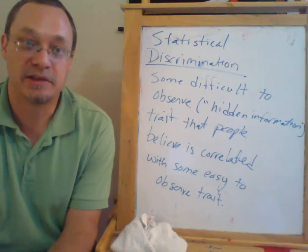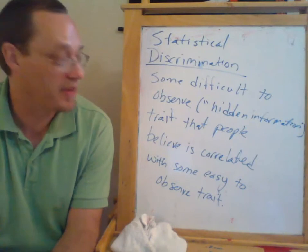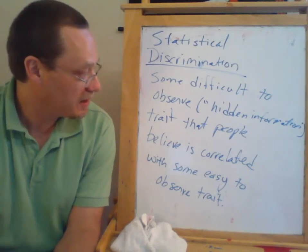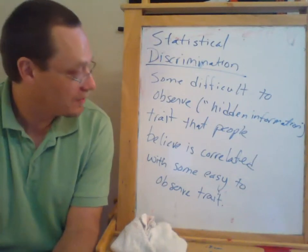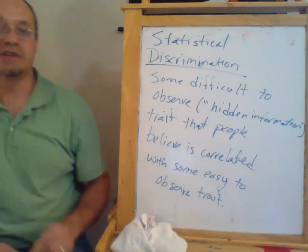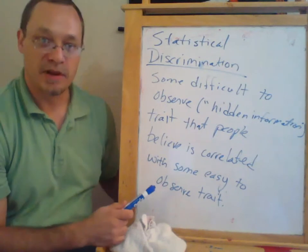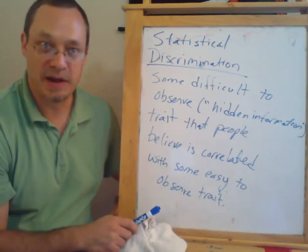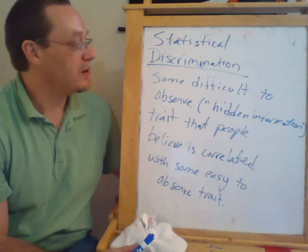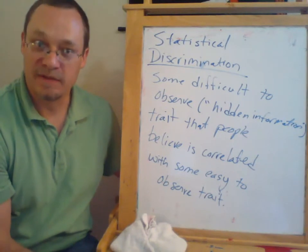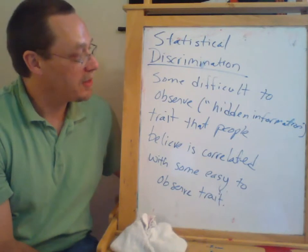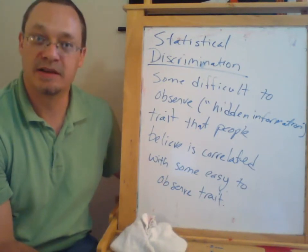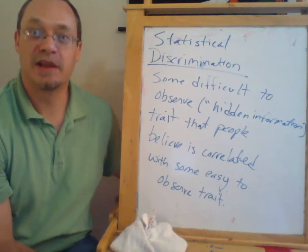In that case, the correlation is real — we have pretty reliable statistics on that. In other situations, the correlation might be imagined; for example, people might believe that fat people are lazy. What's going to happen with statistical discrimination is that if the hidden information is relatively easy to observe — say, with a criminal background check — then people will invest in acquiring that information and won't need to engage in discrimination. But if it's truly difficult to observe, people won't invest in acquiring it and will have an incentive to engage in statistical discrimination.